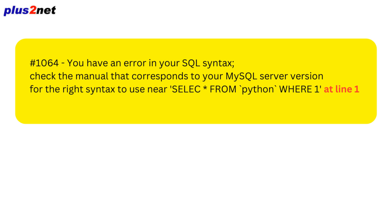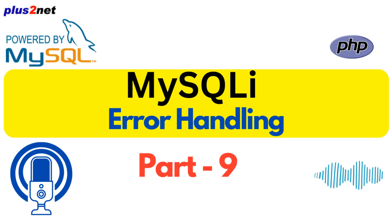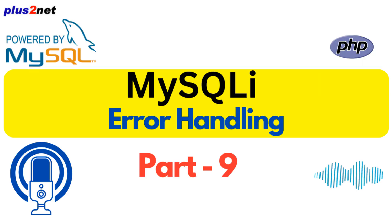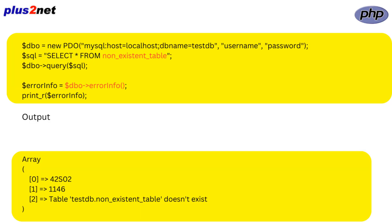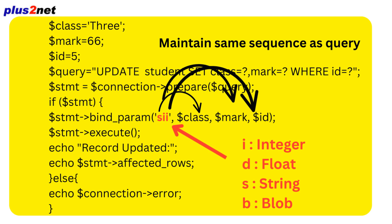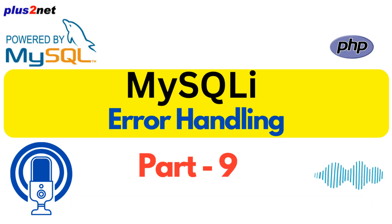On top of being clear, a really good error message will also be specific. Instead of just saying 'syntax error in query' — which could mean a million different things — it would pinpoint the exact location of the issue, like a code editor highlighting a problematic comma in your sentence. And beyond clarity and specificity, you also want context. A truly helpful error message wouldn't just tell you what went wrong; it would give clues about why — for example, suggesting you check the data types of variables being used if there's a type mismatch.